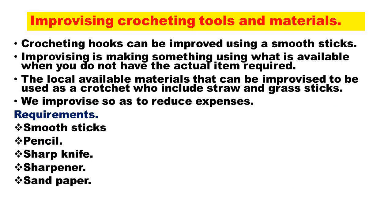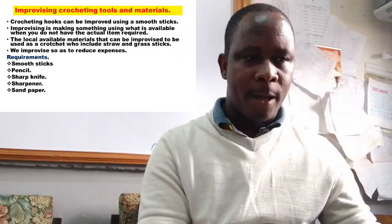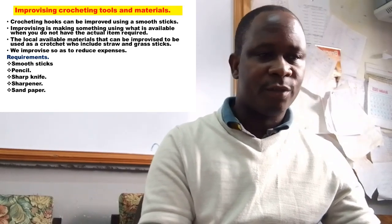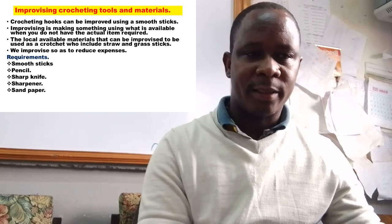Improvising crochet tools and materials: the crochet hook can be improvised using a smooth stick. Improvising means making something using what is available when you do not have the actual item required. Locally available materials that can be improvised include grass and straw sticks. You will need a smooth stick, pencil, sharp knife, sharpener, and sandpaper.